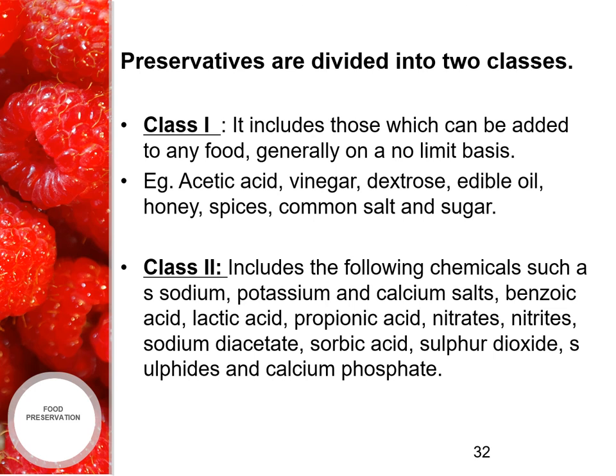Class two includes the following chemicals: sodium, potassium and calcium salts, benzoic acid, lactic acid, propionic acid, nitrates, nitrites, sodium diacetate, sorbic acid, sulfur dioxide, sulfides and calcium phosphates.